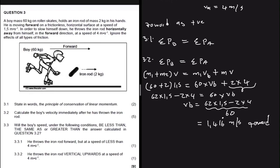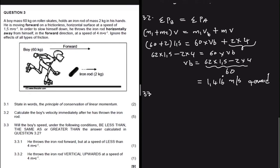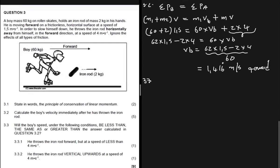The boy's velocity is 1.416 recurring meters per second forward, since we took forward as positive. That concludes 3.2. Now for the interesting one — 3.3 asks whether the boy's speed will be less than, the same as, or greater than the answer calculated in 3.2. 3.3.1 says he throws the iron rod forward but at a speed less than 4 meters per second.